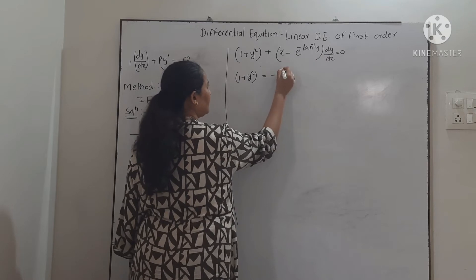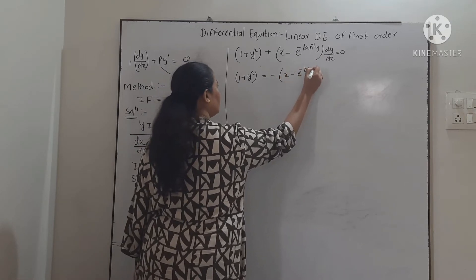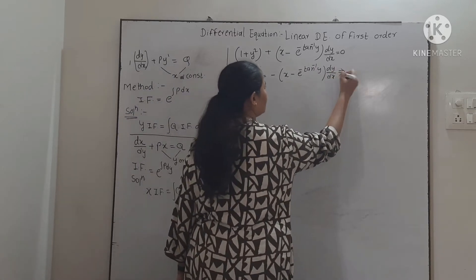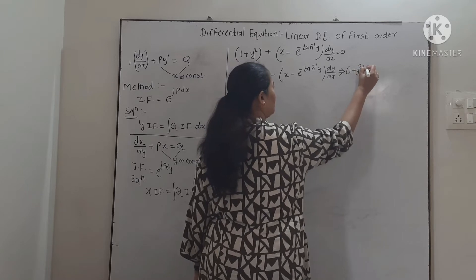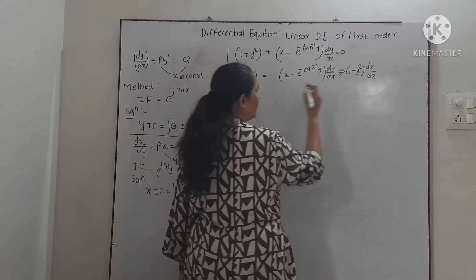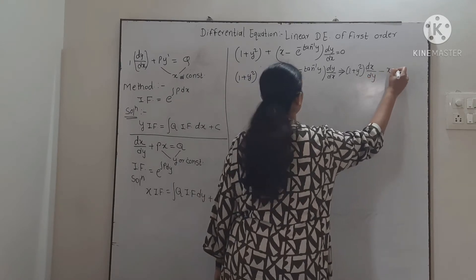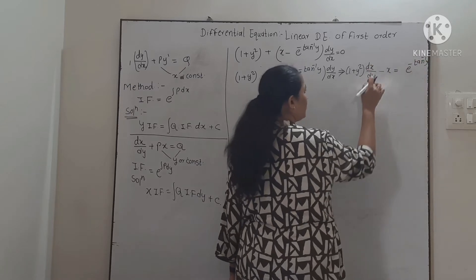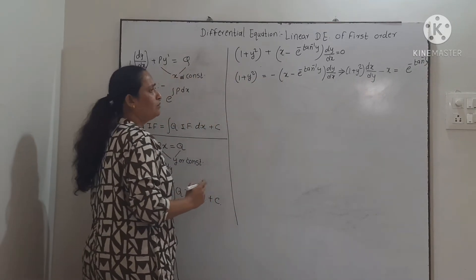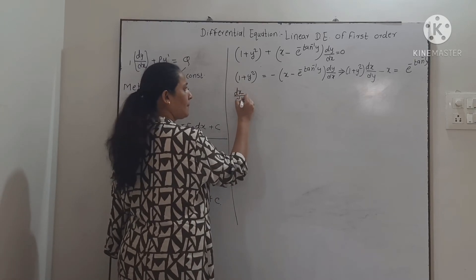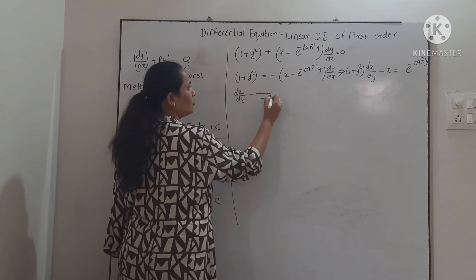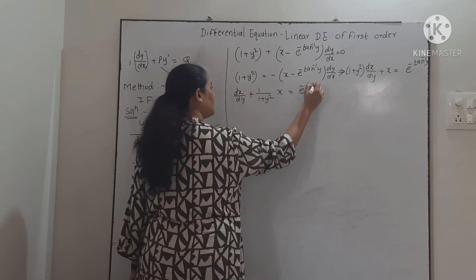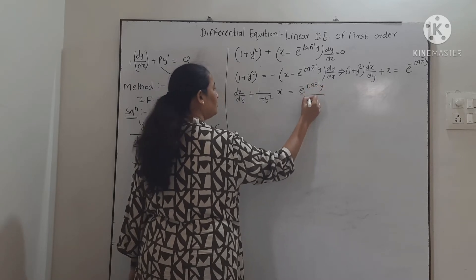Transferring the term to the other side and rearranging, we get (1 + y²) dx/dy + x = e^(−tan⁻¹y). Dividing throughout by (1 + y²), we obtain dx/dy + 1/(1 + y²) · x = e^(−tan⁻¹y) / (1 + y²).